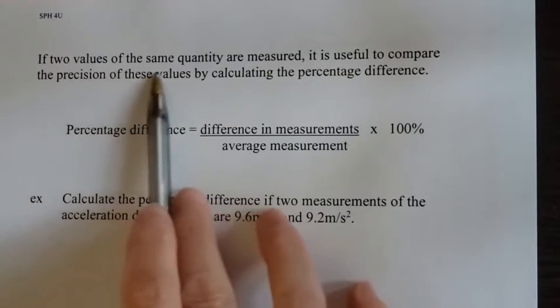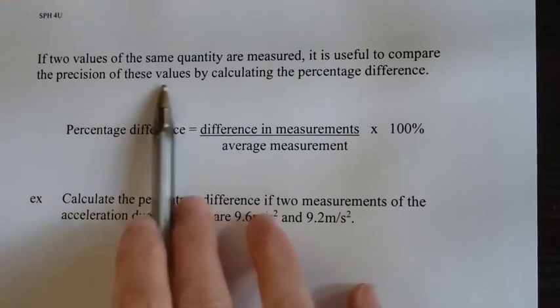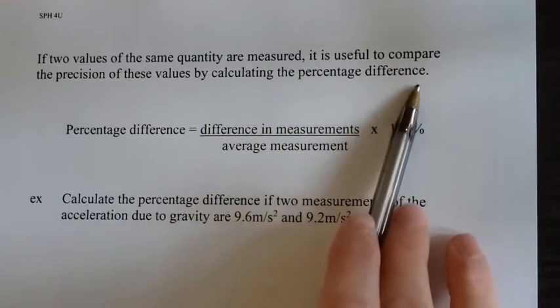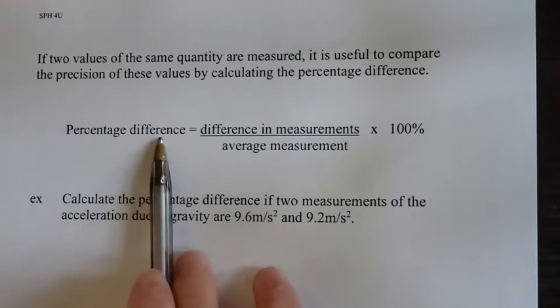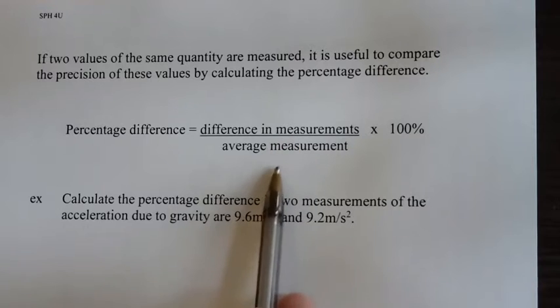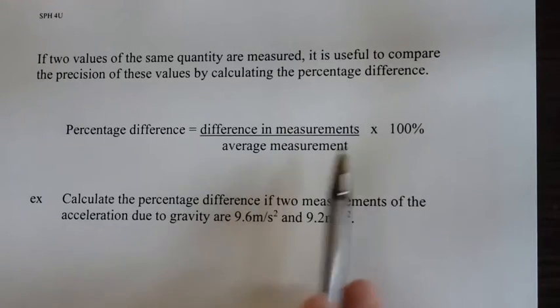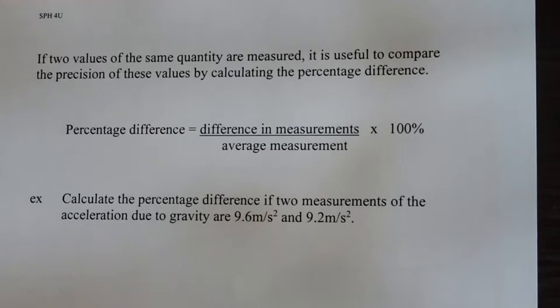If two values of the same quantity are measured, it's useful to compare the precision of these values by calculating the percentage difference. The percentage difference formula: first you need the difference in measurements, that means you just subtract them, and then divide by the average of the numbers and multiply by 100%. Here's our example.